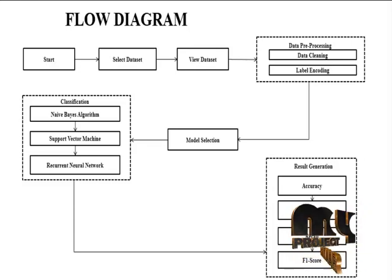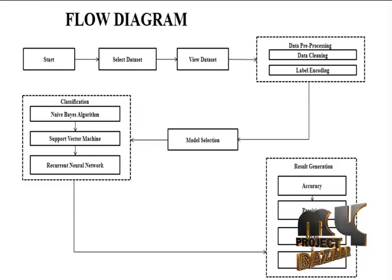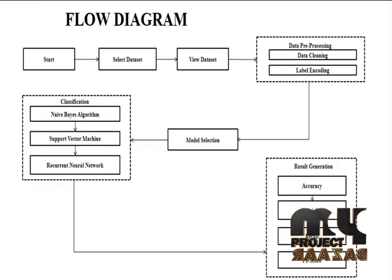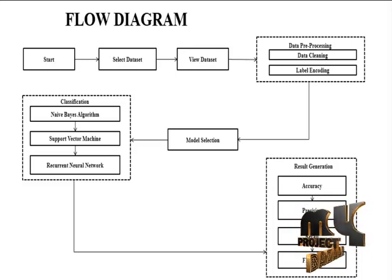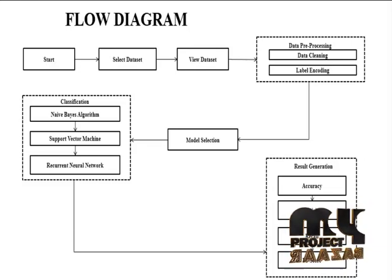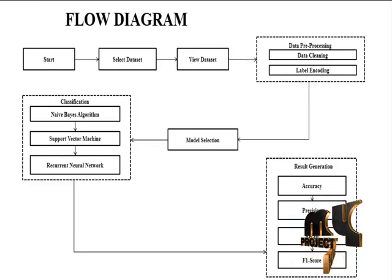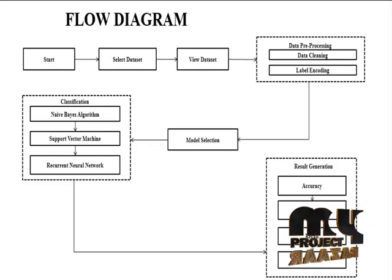After selecting independent and dependent variables, we are going to split our dataset into training dataset and testing dataset. Then it will move into classification. In classification, we are using three different types of algorithms: two different machine learning algorithms and one deep learning algorithm — namely the K-Nearest Neighbors algorithm, Support Vector Machine algorithm, and Recurrent Neural Network algorithm. These three algorithms are able to train our dataset and generate results in the form of matrices like accuracy, precision, recall, and F1 score.